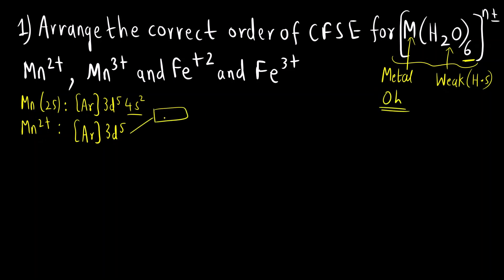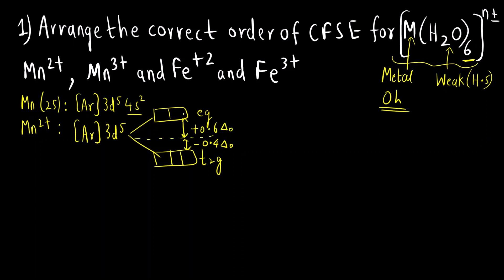In an octahedral complex there are two levels: the lower level T2G at -0.4Δ and the higher level EG at +0.6Δ. For 3D5 in high spin we fill one, two, three electrons in T2G and four, five in EG. CFSE = 3×(-0.4) + 2×(0.6) = -1.2 + 1.2 = 0.